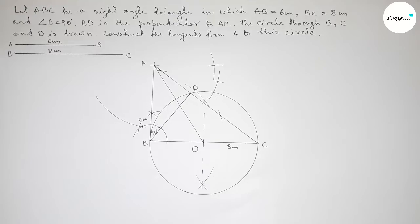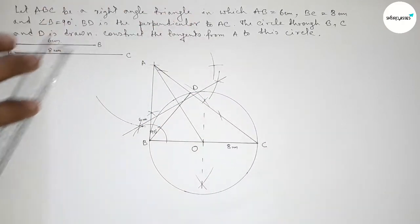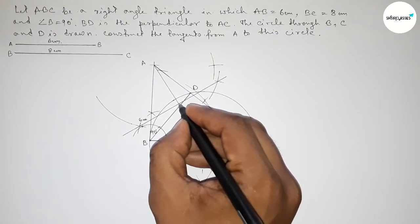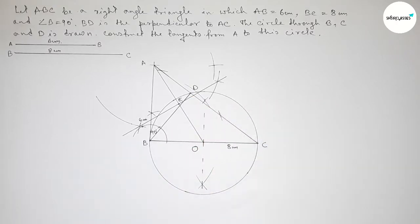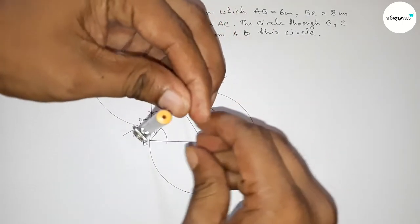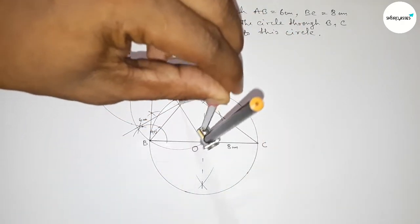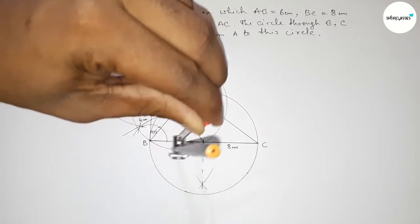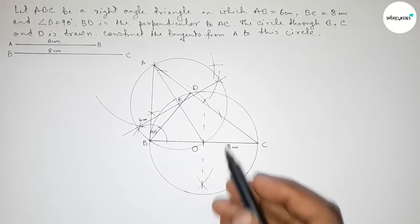Joining the intersections gives the bisector of AO, which meets AO at point E. Now putting the compass on point E and taking radius OA (equal to OB), we draw a circle through points A and B.